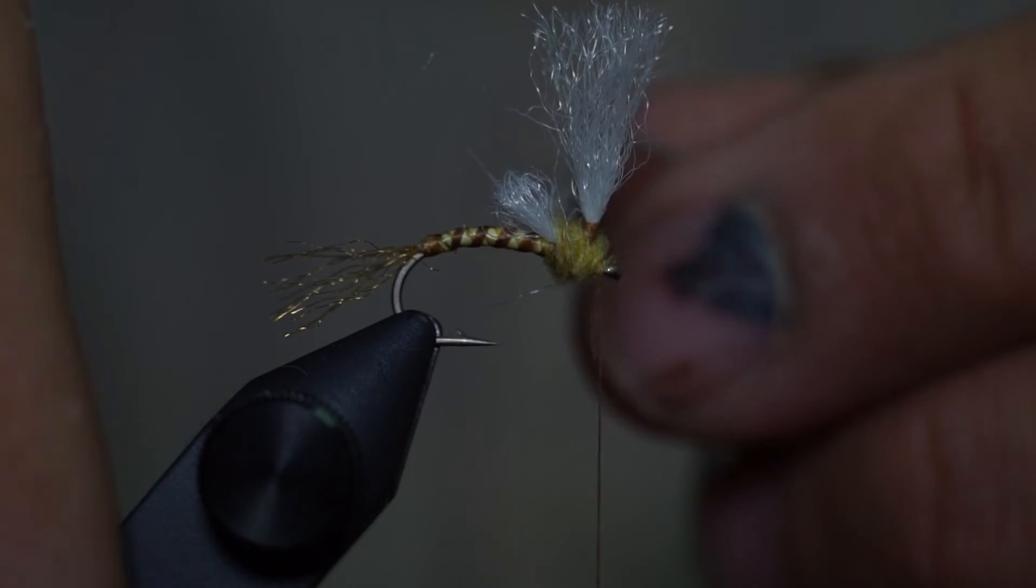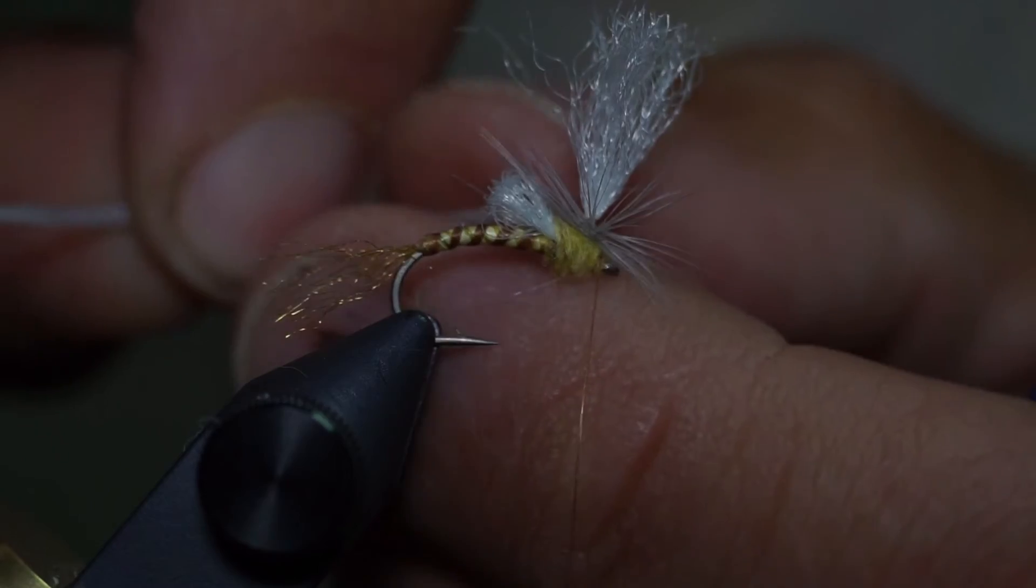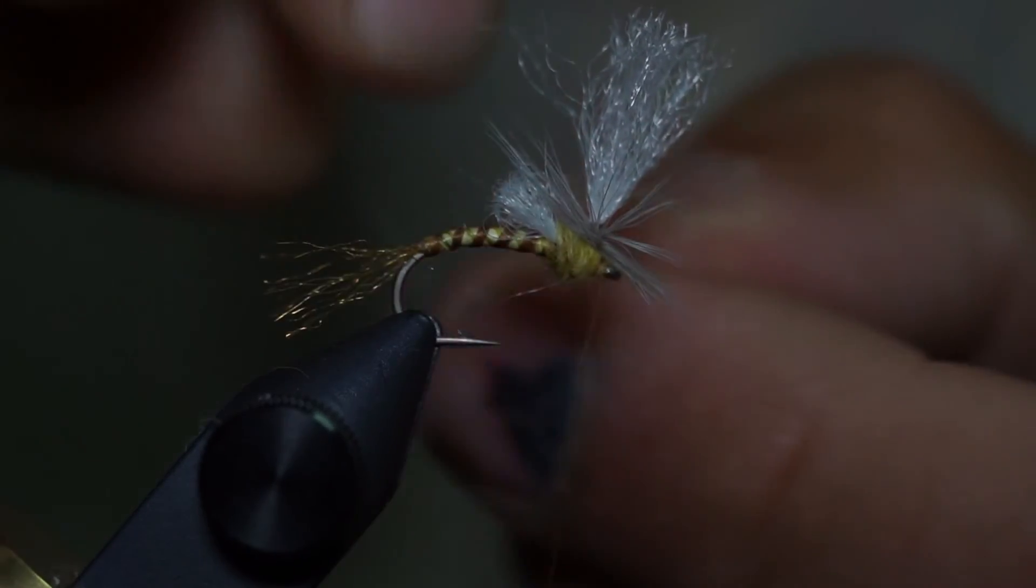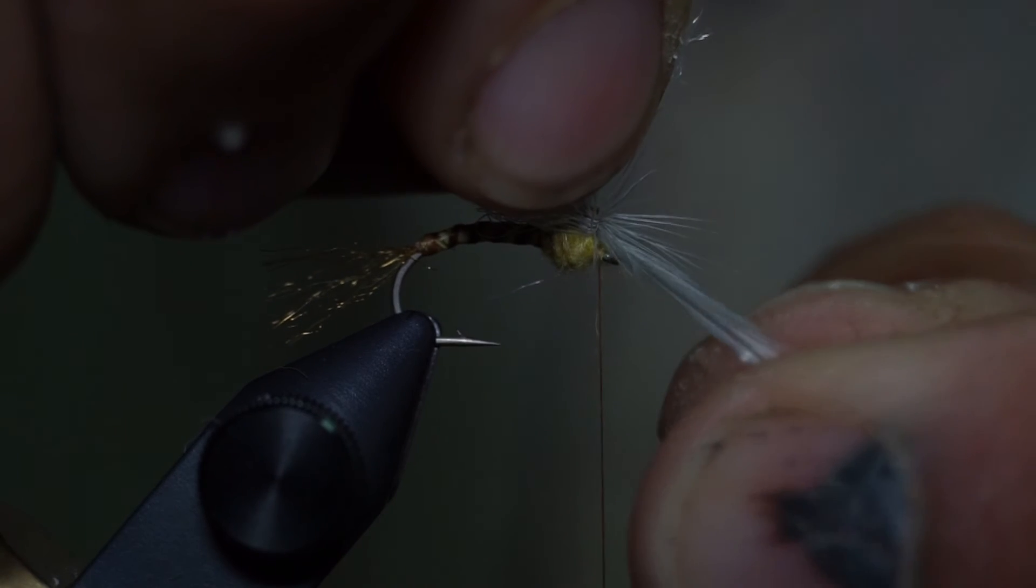And next, I will wrap the hackle. And if it's not too short, I'll just use my fingers. I won't use hackle pliers. And I do four or five wraps. Again, I want it to float good, so you want to make sure you have nice lots of hackle on there.